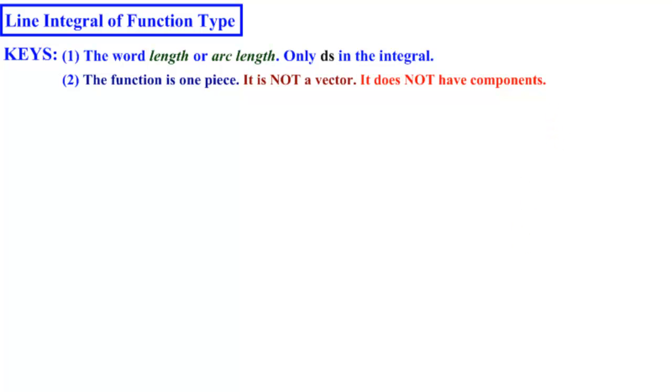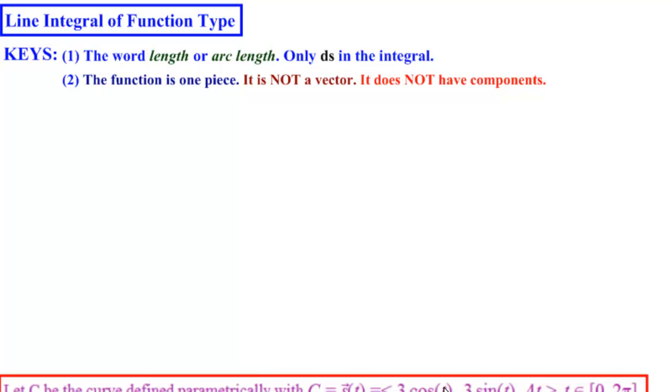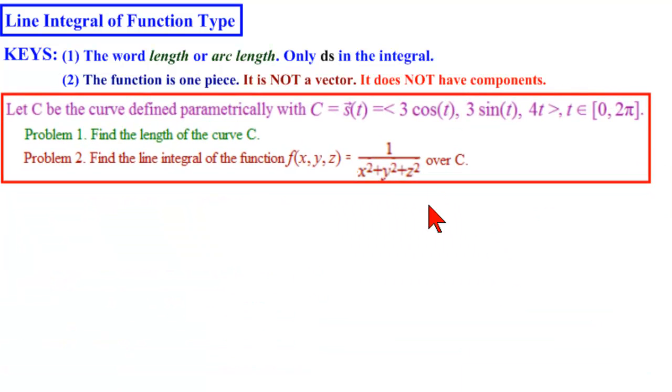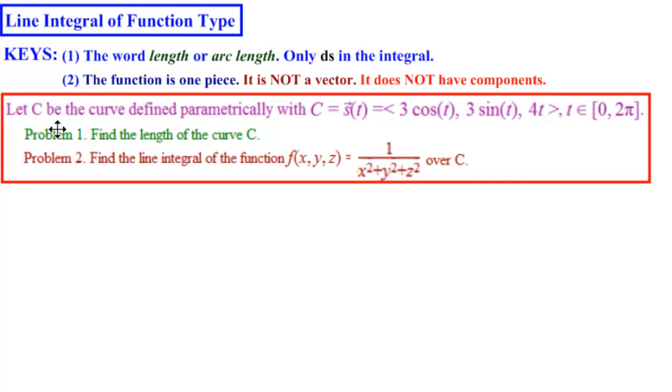Here's a couple of problems. We're going to solve both of these. Let c be the curve defined parametrically with c equal to s(t), that's a vector, with three components: 3 cosine of t, 3 sine of t, 4t, and we're given an interval t from 0 to 2π.